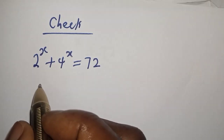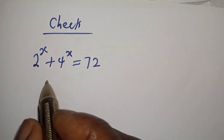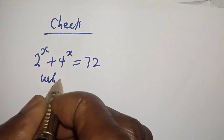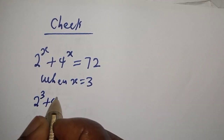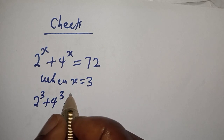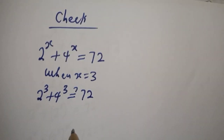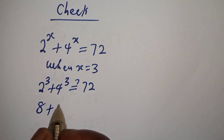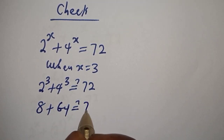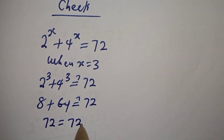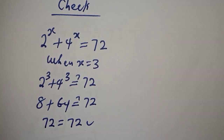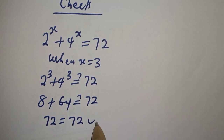To check, we have 2 raised to power s plus 4 raised to power s is equal to 72. When s is equal to 3, this is 2 raised to power 3 plus 4 raised to power 3, which must equal 72. Then 2 raised to power 3 is 8, plus 4 raised to power 3 is 64, must equal 72. And 8 plus 64 is 72, equal to 72. We satisfy the equation at s equal to 3. Before you leave, like, share, comment, and subscribe. Thank you, bye bye.